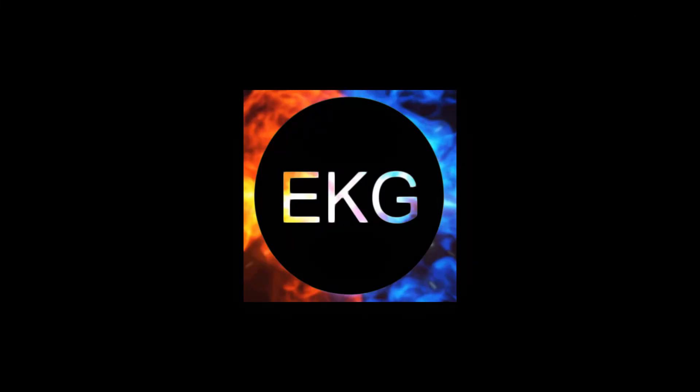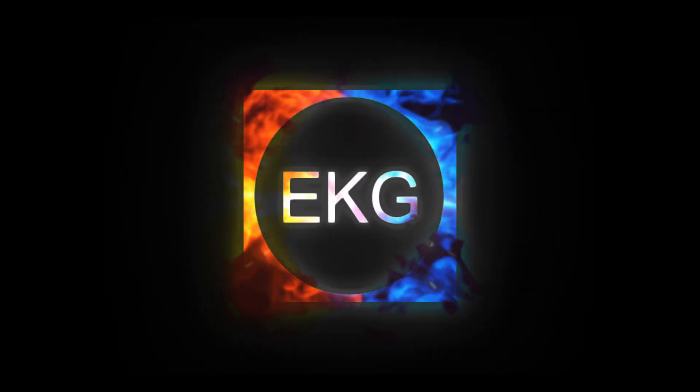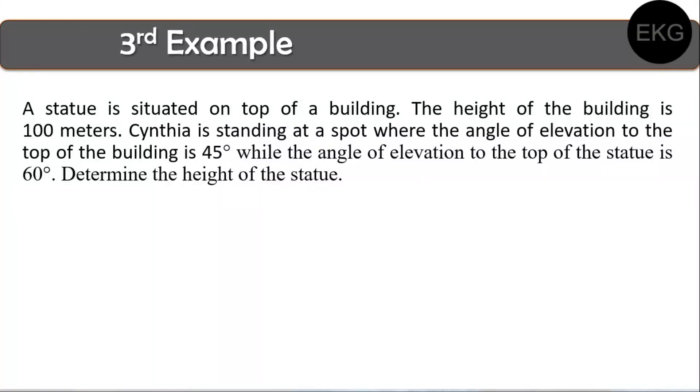For our third example, a statue is situated on top of a building. The height of the building is 100 meters. Cynthia is standing at a spot where the angle of elevation to the top of the building is 45 degrees, while the angle of elevation to the top of the statue is 60 degrees. Determine the height of the statue.